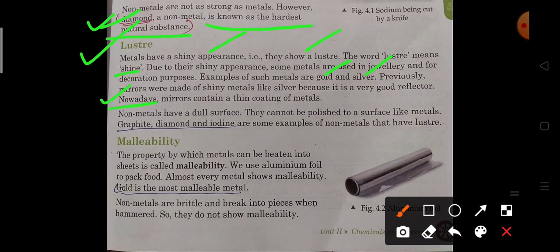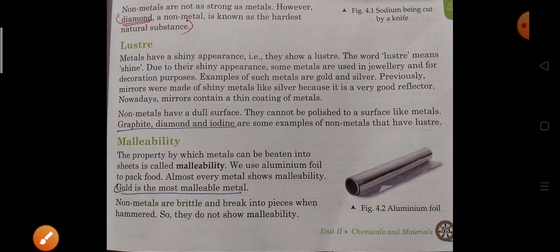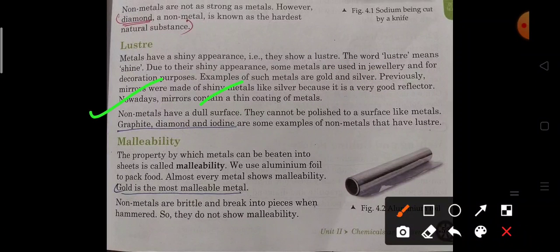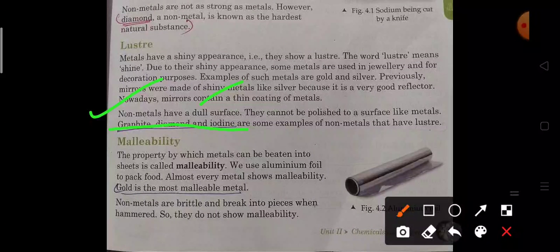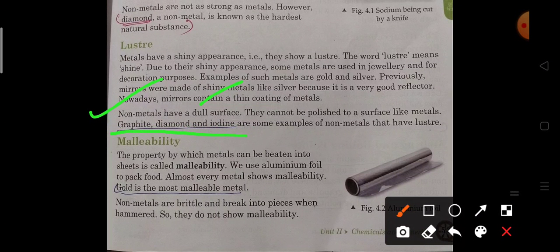Nowadays mirrors contain a thin coating of metal. Non-metals are dull, they have dull surface, they cannot be polished to a surface like metal. Graphite, diamond and iodine are the exceptions, some examples of non-metals that have lustrousness.